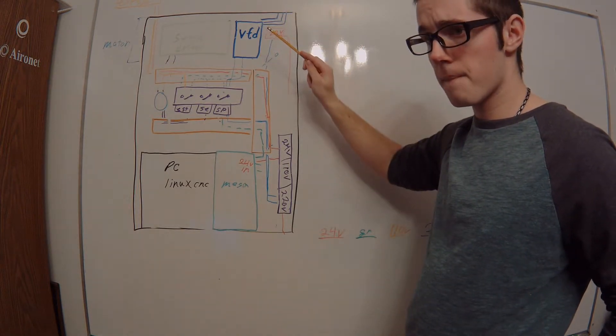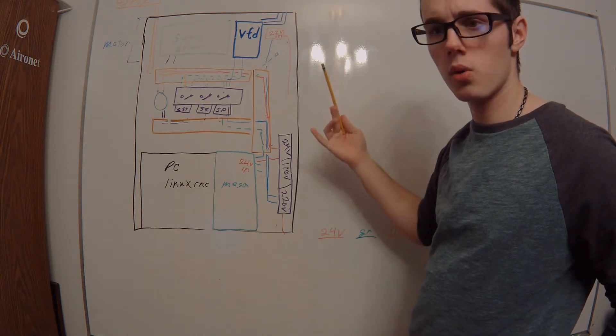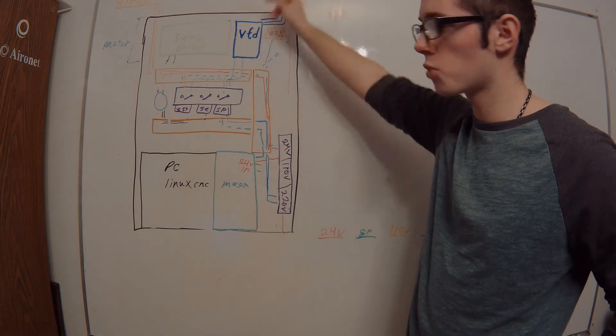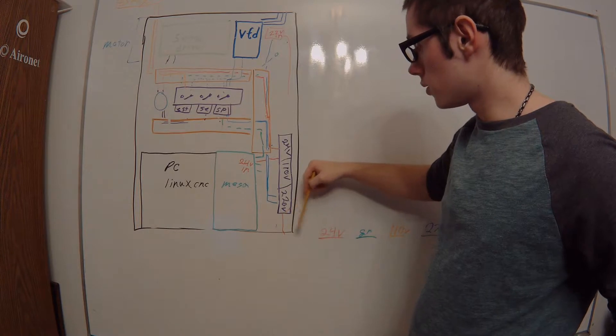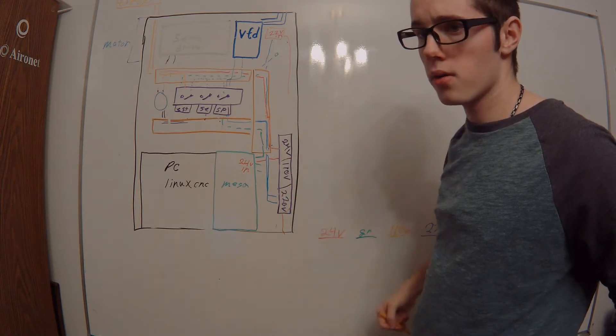Now it's not, what would you say, symmetrical with where the servos go out. Some of them go up top, the Z goes up top, and the other two go down here on the side. I didn't bother putting them in.